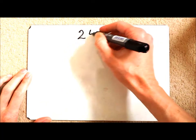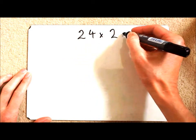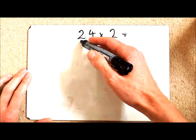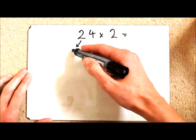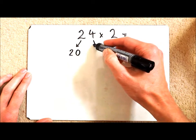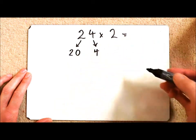So imagine I have the sum 24 times 2. The first thing to do is to partition your number. So I have 2 tens or 20 and I have 4 ones over here in my ones column.